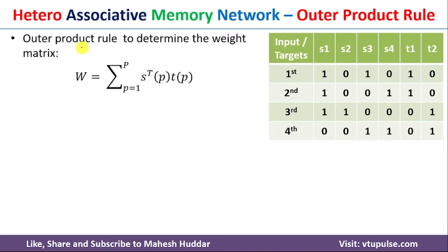To find the weight matrix in a hetero associative memory network using the outer product rule, we use the following equation: W is equal to the summation from P equals 1 to the number of inputs of S-transpose of P multiplied by T of P. Here, S is the input vector and T is the target vector.